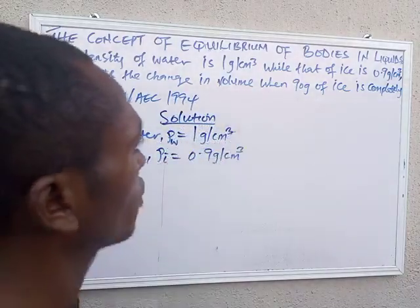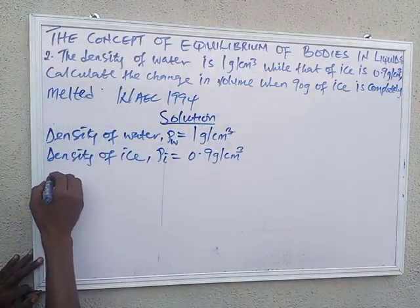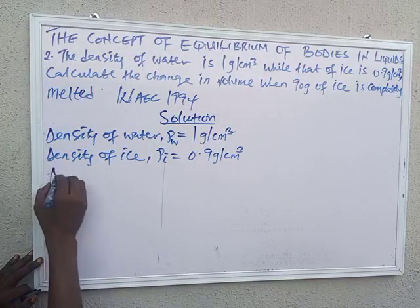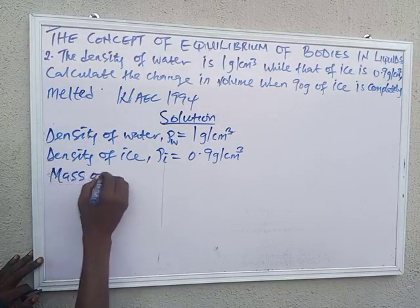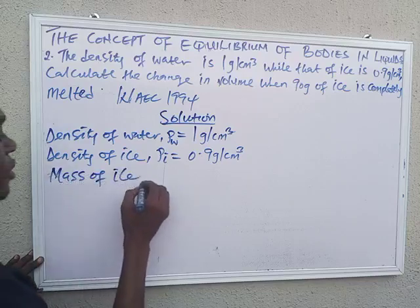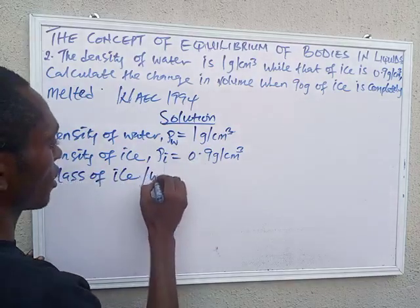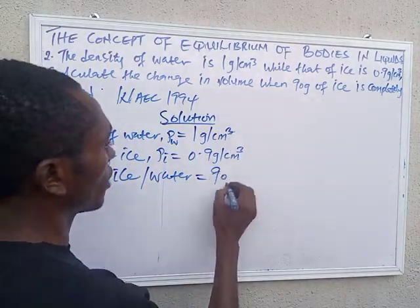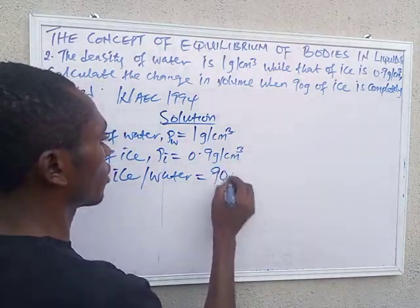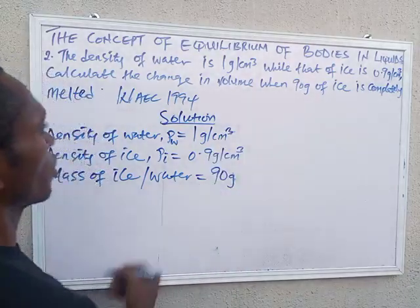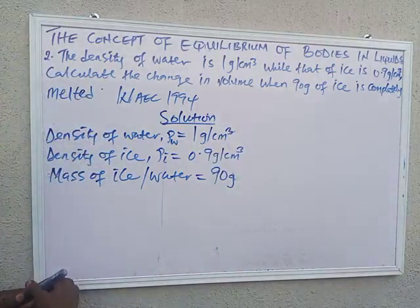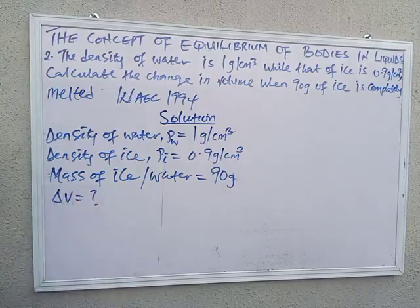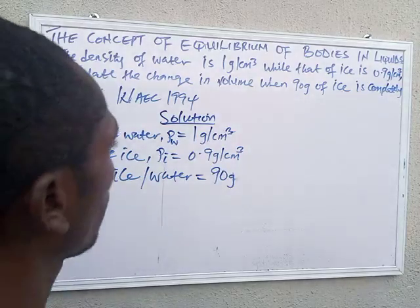The mass of ice — or we can say the mass of water — is equal to 90 grams. The question asks us to calculate the change in volume.